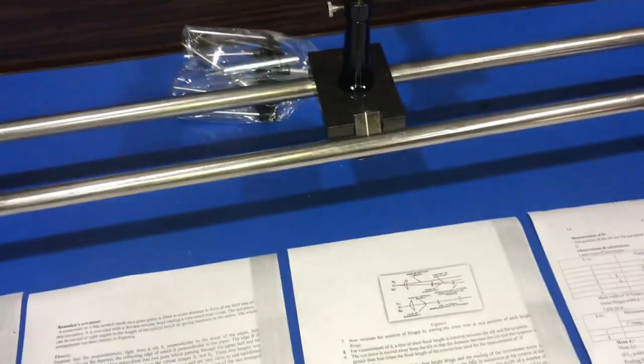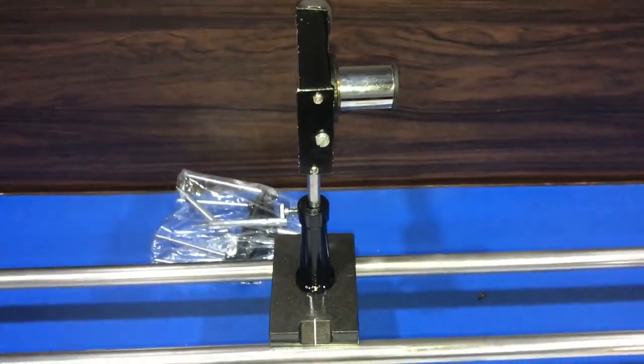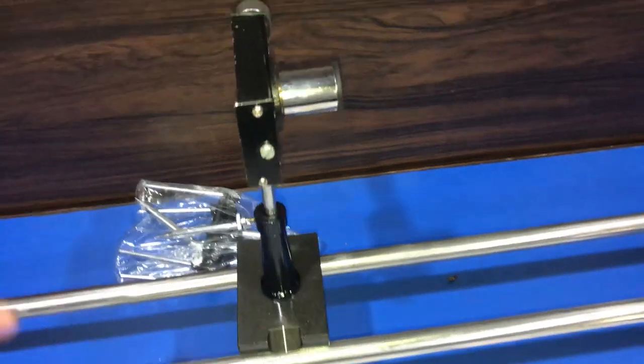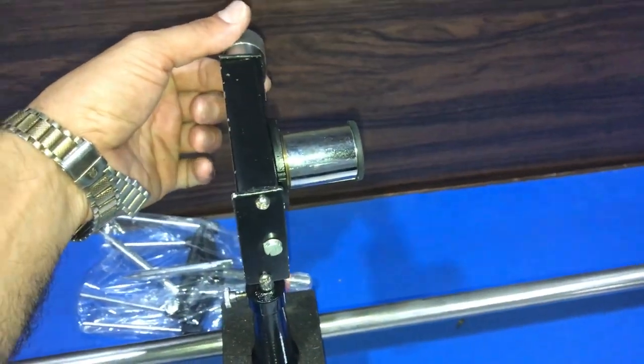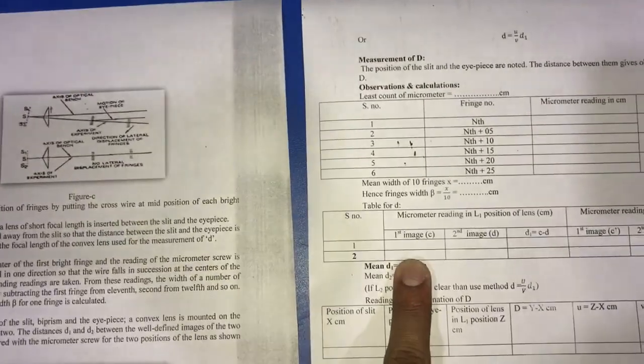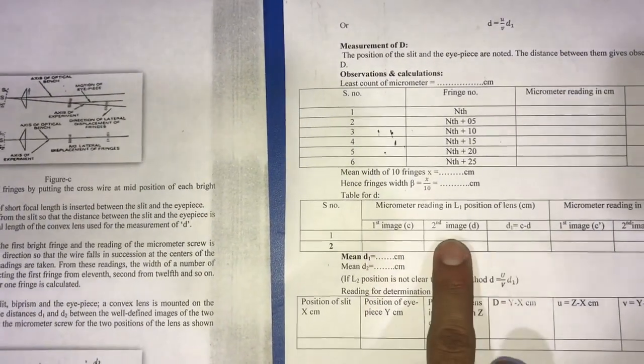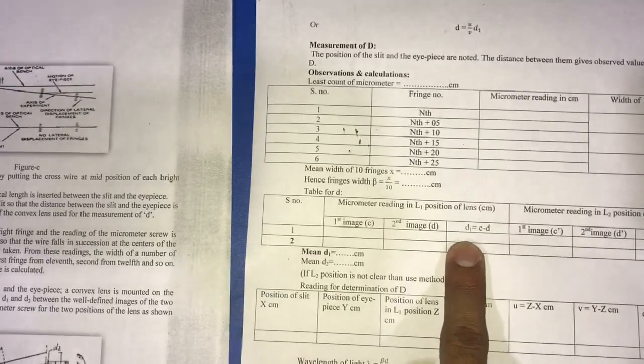We position it in such a way that when we observe from this eyepiece we get two parallel sources of light. We calculate the distance between the two sources with the help of this micrometer and note the reading in the table: image first, image second, and calculate the distance d1.